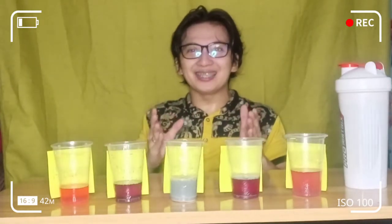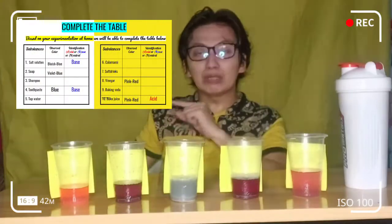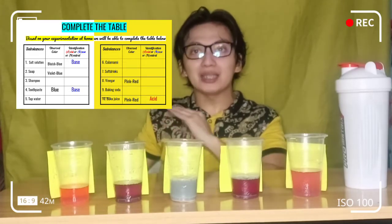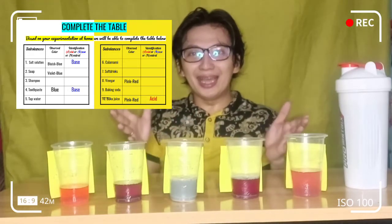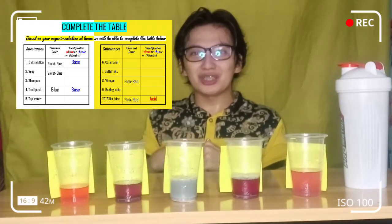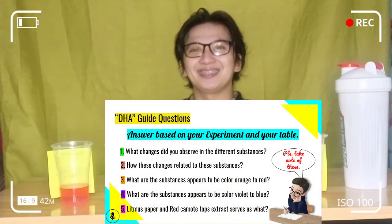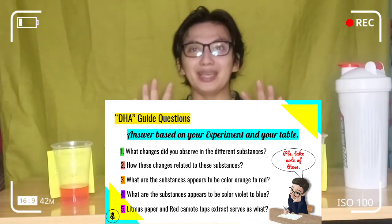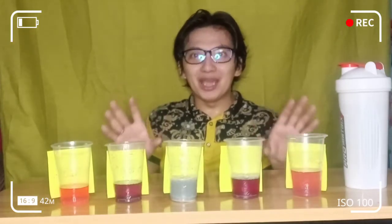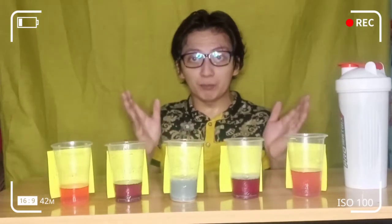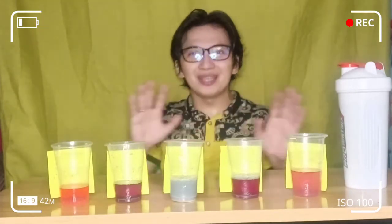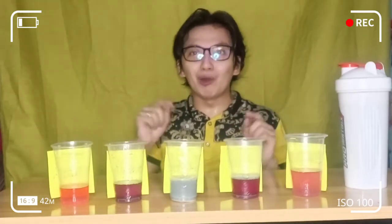So all we have to do is complete this table. Do not forget to fill in all the colors and your identification so that we will be able to complete the task for today's experimentation. Please answer the following guide questions after you complete the table. All you have to do is take time, be observant, and make your own sentences. I hope you have learned something today — which is an acid, which is a base — so that we will be able to identify all the substances that can be found inside our own houses.